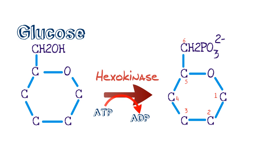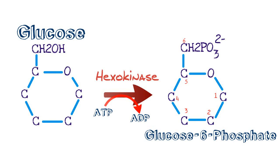So you have a glucose molecule with a phosphate group at the sixth carbon — this is called glucose-6-phosphate. You can count the carbons as shown. You've just undergone the first reaction that is both rate-limiting and requires energy — requires ATP. This is a high-yield step to know.